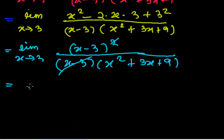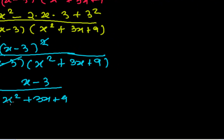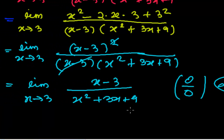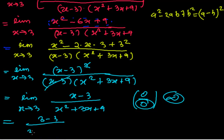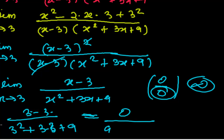So now we have limit x tends to 3 of x minus 3 over x squared plus 3x plus 9. When you plug in x equals 3, you will not get 0 over 0 form. Simply plug: 3 minus 3 is 0 in the numerator, and in the denominator 9 plus 9 plus 9 equals 27. So 0 upon 27 equals 0.